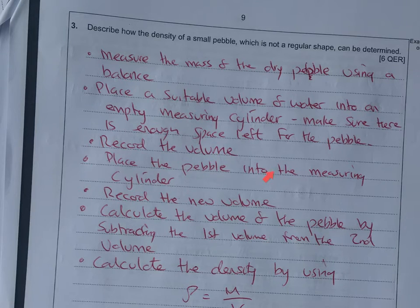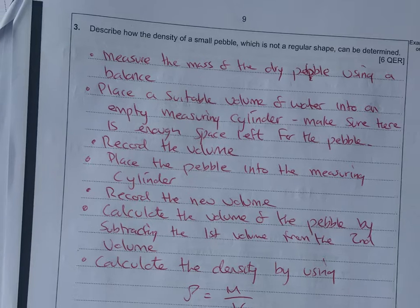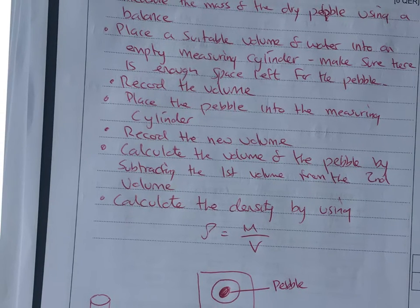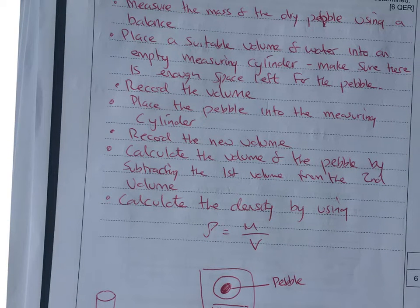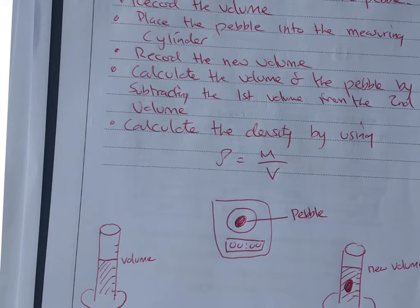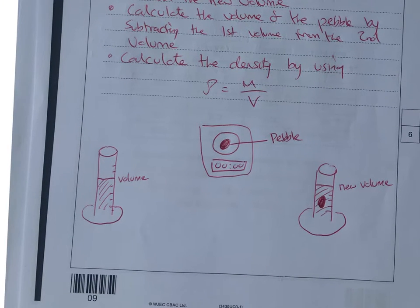Then you're going to get a measuring cylinder and place a suitable volume of water into that. Make sure there's enough space for when you drop the pebble in that the water is not going to overflow. Pick maybe 50 centimeters cubed. Then record that volume. When you put the pebble in, it's going to displace some of that water, so record that new volume.